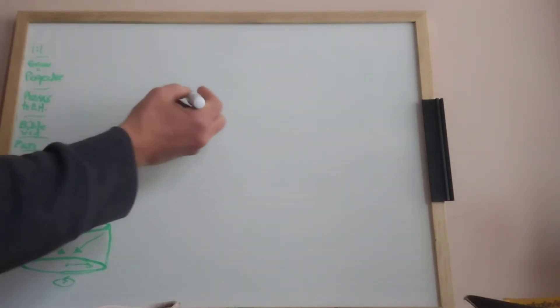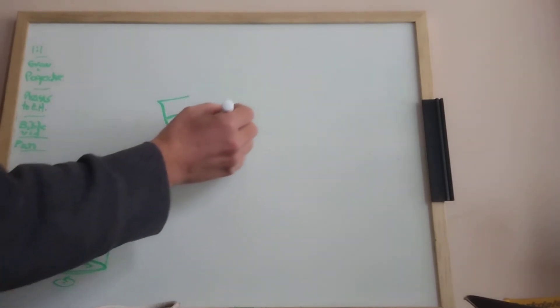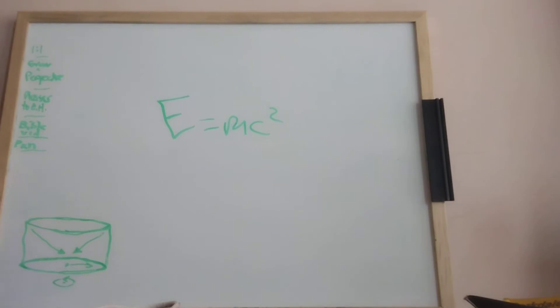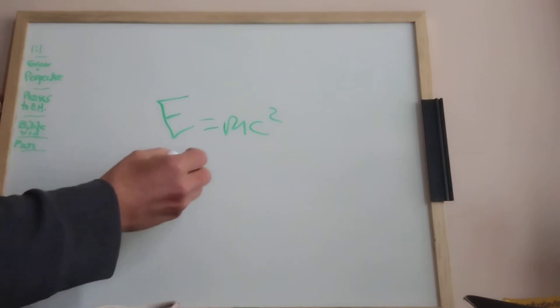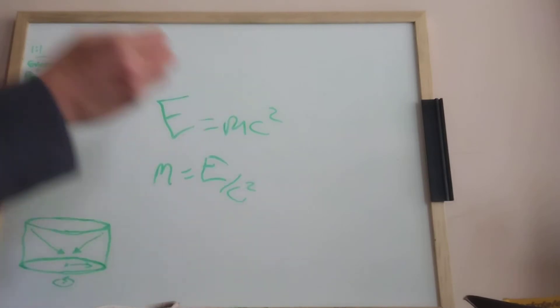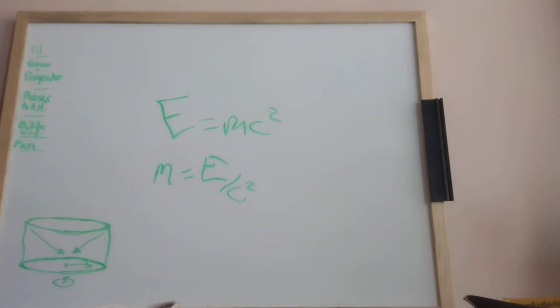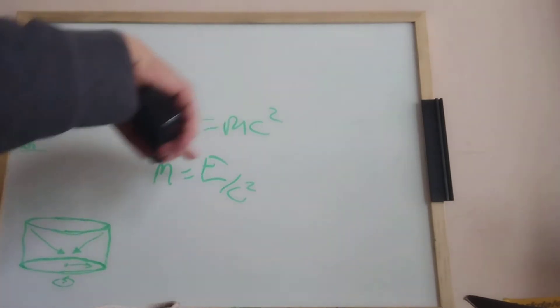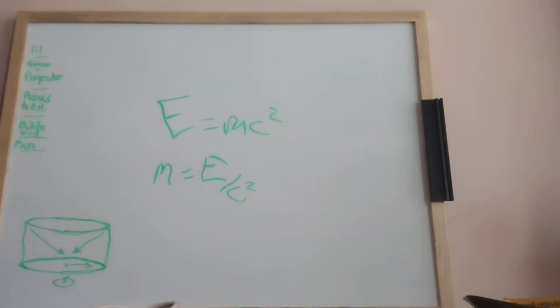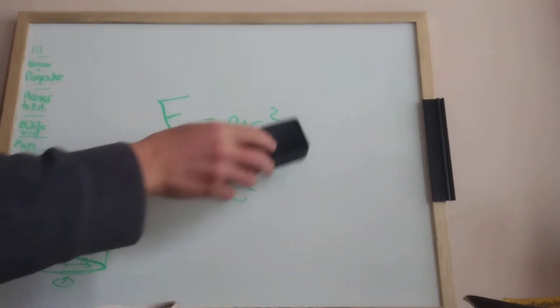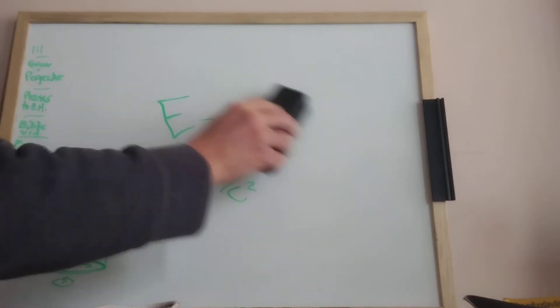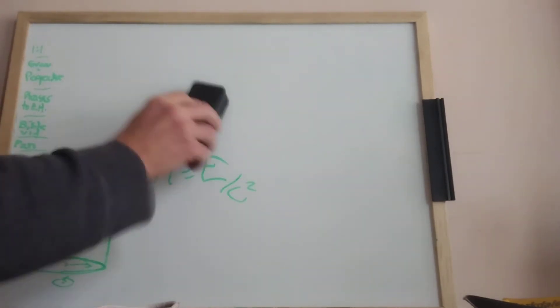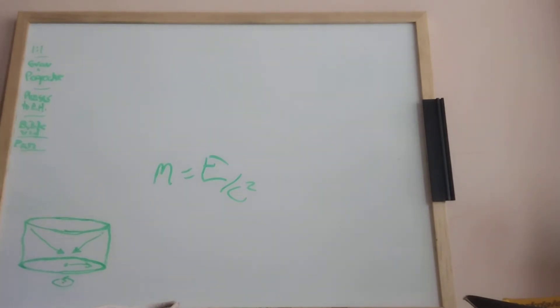We're gonna make it m equals E over c squared because we want to find out about mass. If you want to know about energy, you take mass, and since it's c squared, speed of light squared, it explodes out and you get a bunch of energy. But let's think about the mechanism of how you got that mass.